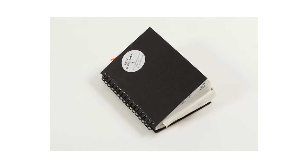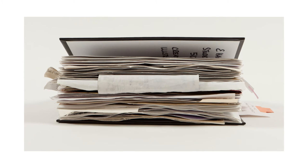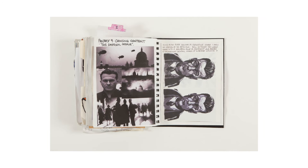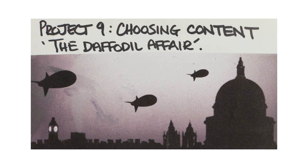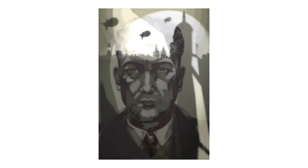Hello, I'm Judy Brown and I'm at the July assessment. We're looking at the work of Lizzie Hannon and in particular one of the exercises on the Illustration One course that lots of people have problems with, which is the choosing content exercise. But Lizzie's image, I think, is one of the most successful I've seen.